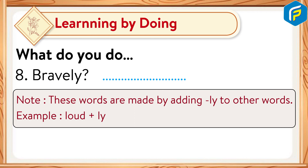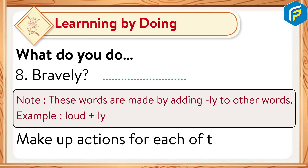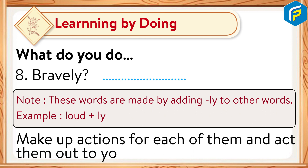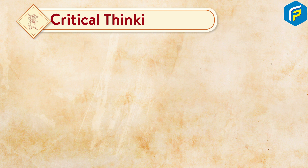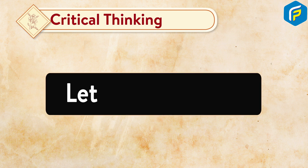Make up actions for each of them and act them out to your class. Critical thinking — Let's play a game: activities for different kinds of weather. What can you do with the type of weather shown?